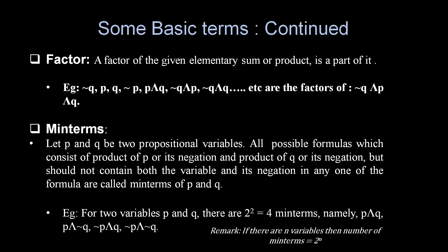Now, Minterm: Let P and Q be two propositional variables. All possible formulas which consist of product of P and its negation, and product of Q and its negation, but should not contain both the variable and its negation in any one of the formula are called minterm of P and Q.